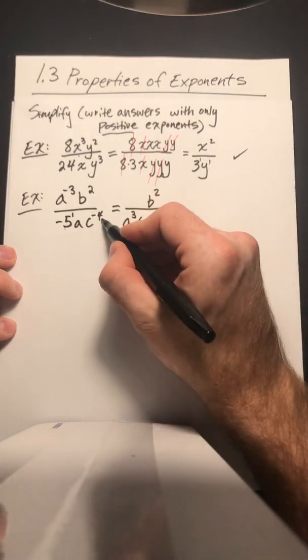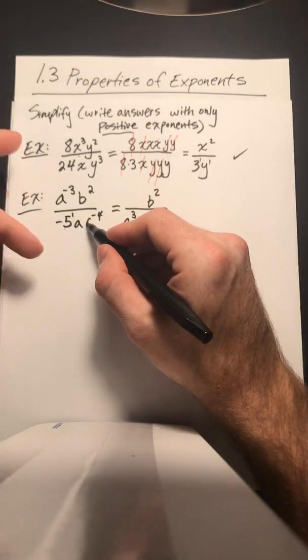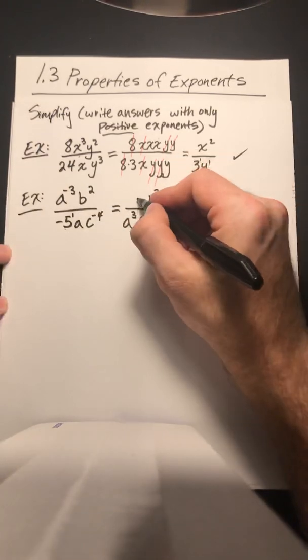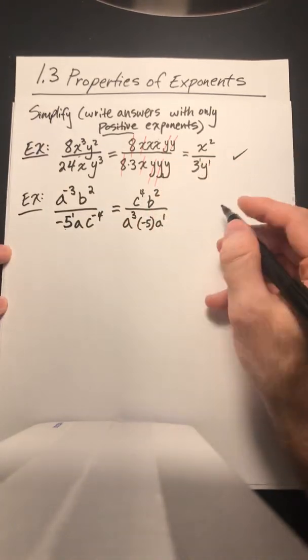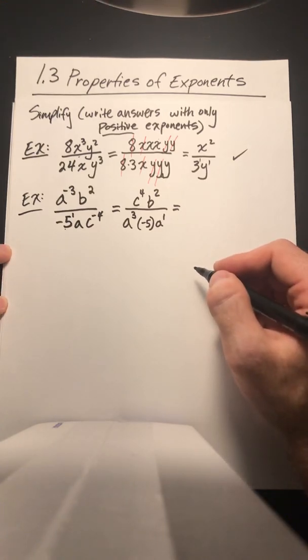But then the c to the negative 4, since it's in the denominator, when I do the reciprocal, we're going to flip it upstairs. So it's going to go right up here, c to the 4.